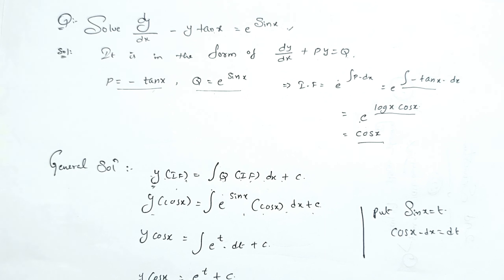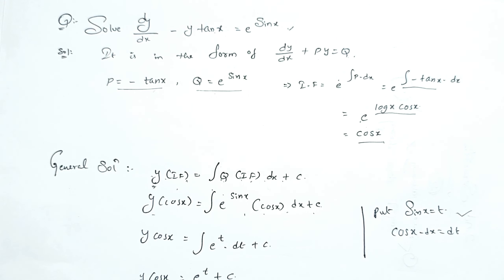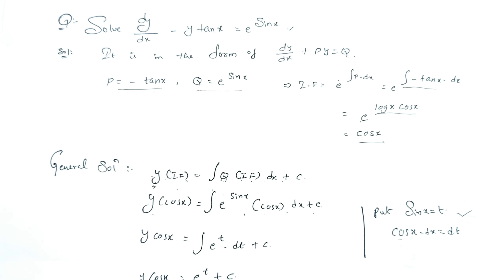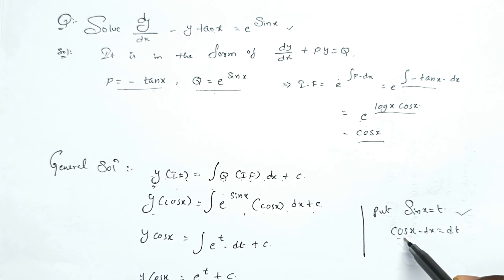For the integration, suppose t equals sin x. Then the derivative of sin x is cos x, so dt equals cos x dx. We substitute: the integral becomes the integral of e^t dt.